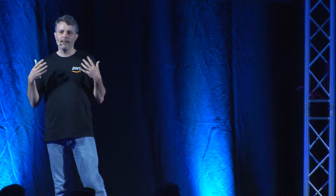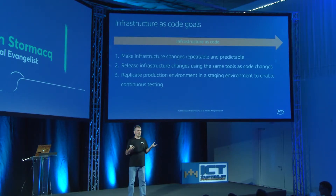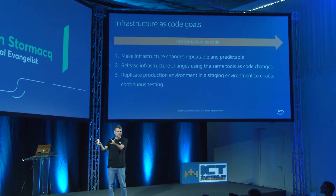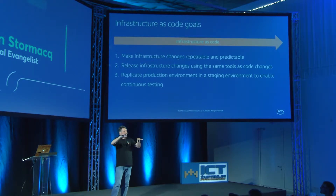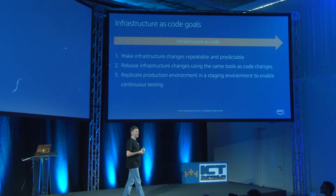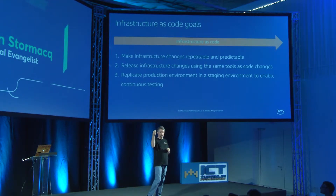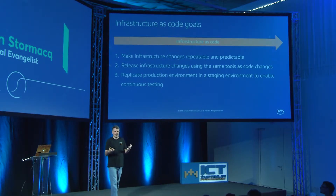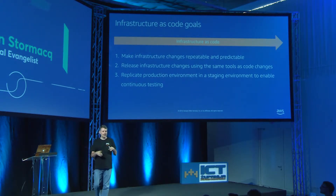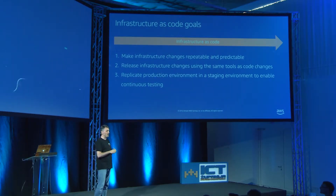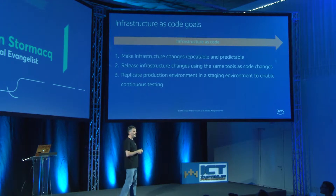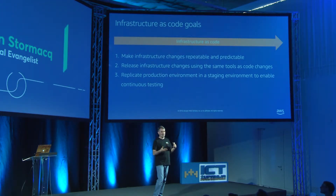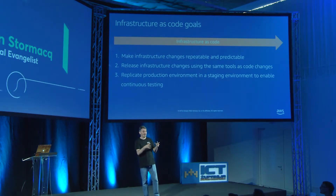The goal of infrastructure as code is to create repeatable infrastructure — always the same. There is nothing worse in a data center than a Snowflake server. A Snowflake server looks like it is configured like all the other servers, but actually it's unique — exactly like a snowflake: from a distance they all look the same, but under a microscope they are all different. This happens all the time in physical architecture because someone SSHes into a production server at 3 a.m. to fix an urgent problem, installs a new package, and forgets to document it. Suddenly that server is different from all the others.